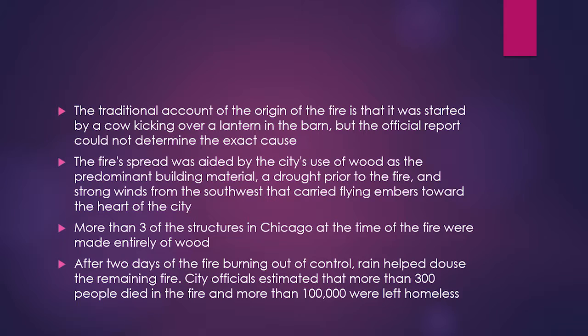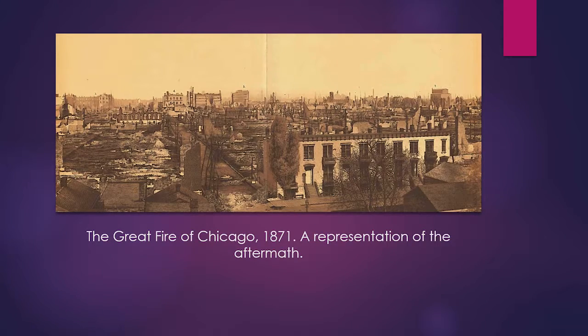After two days of the fire burning out of control, rain eventually helped douse the remaining flames. City officials estimated that more than 300 people died in the fire and more than 100,000 were left homeless. Here we can see a representation of the aftermath of the Great Chicago Fire of 1871 — truly a sad sight to behold.